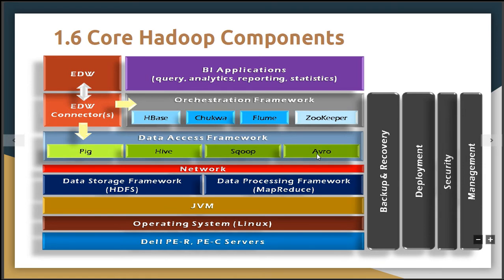Avro is specifically used along with remote procedure call (RPC). Whenever we want to establish a connection from the external world to HDFS, a remote procedure call is required. Avro works as an interface for handling that RPC and accessing stubs distributed among HDFS. Understanding the concept of RPC connection with Avro requires knowledge of remote procedure call, which is part of computer networks.